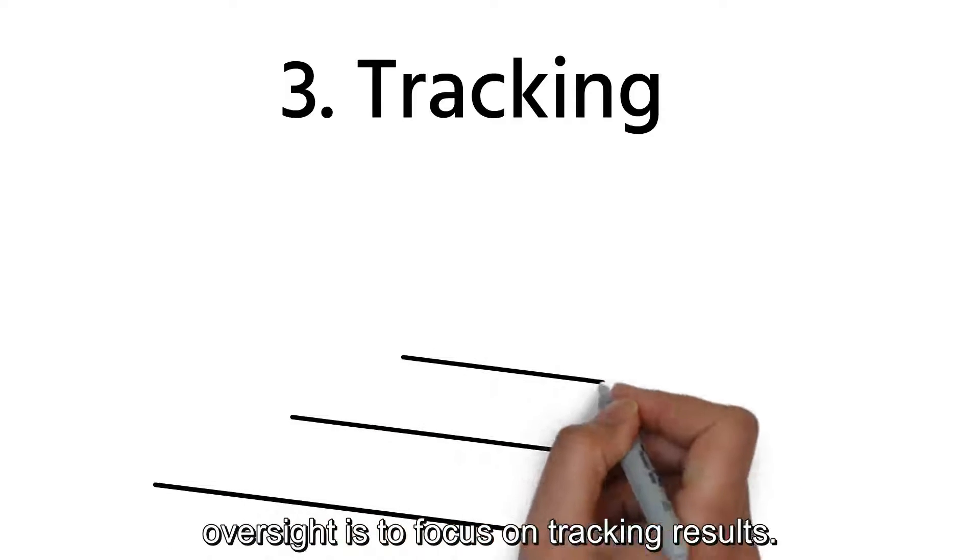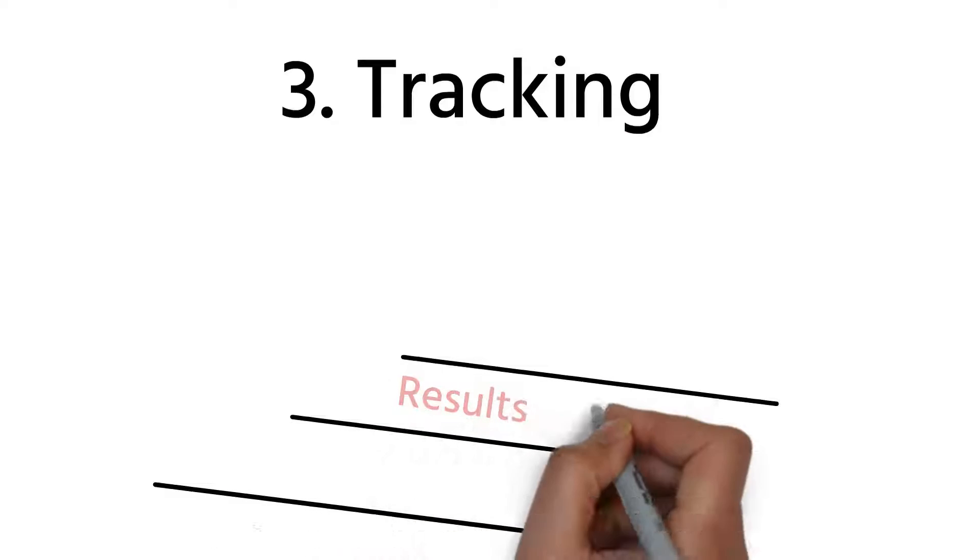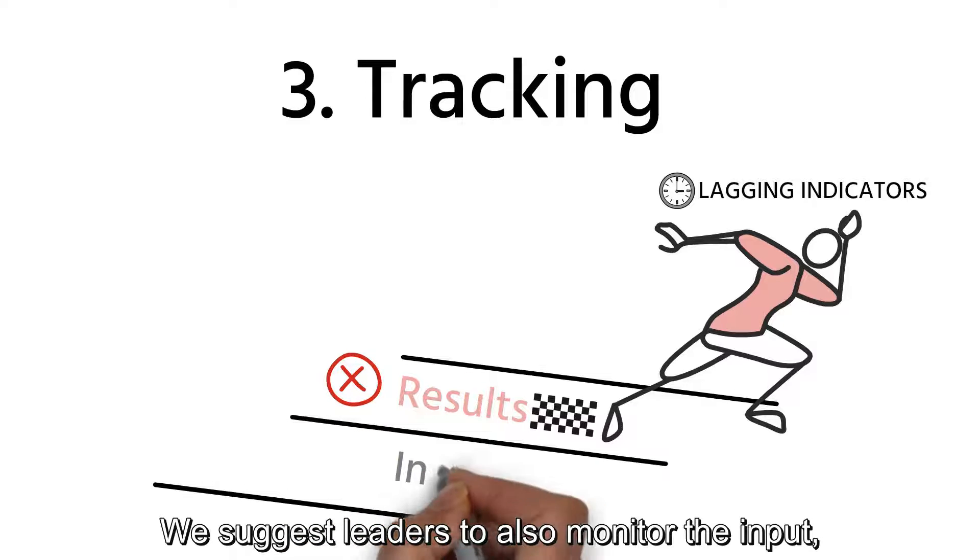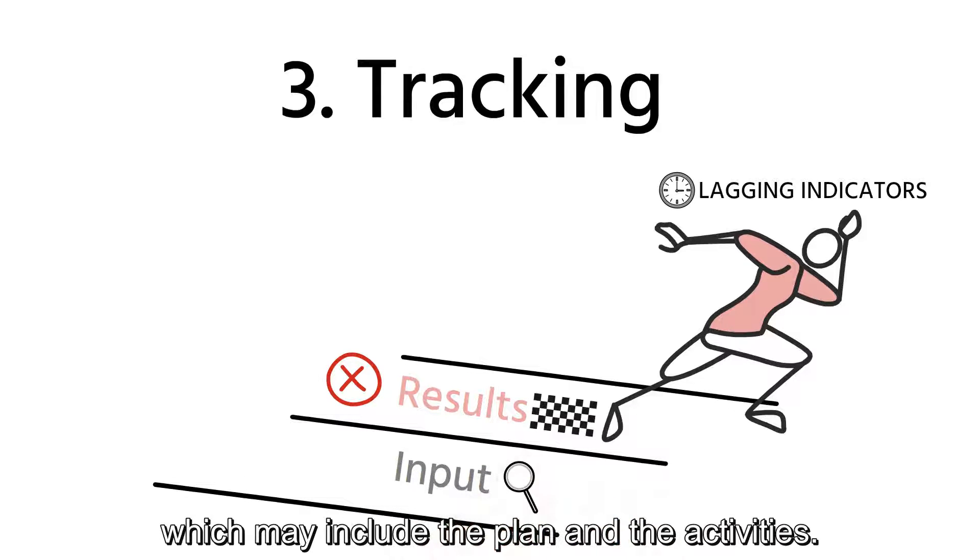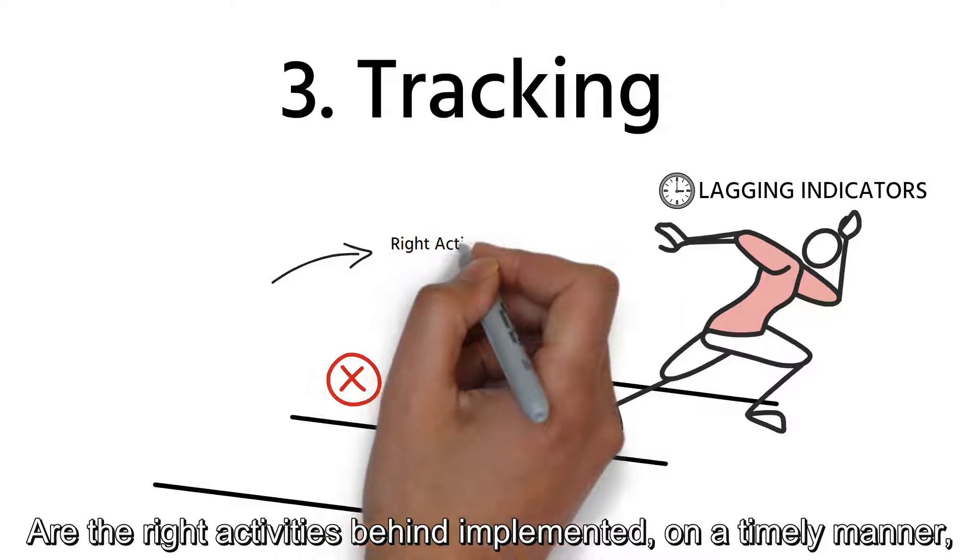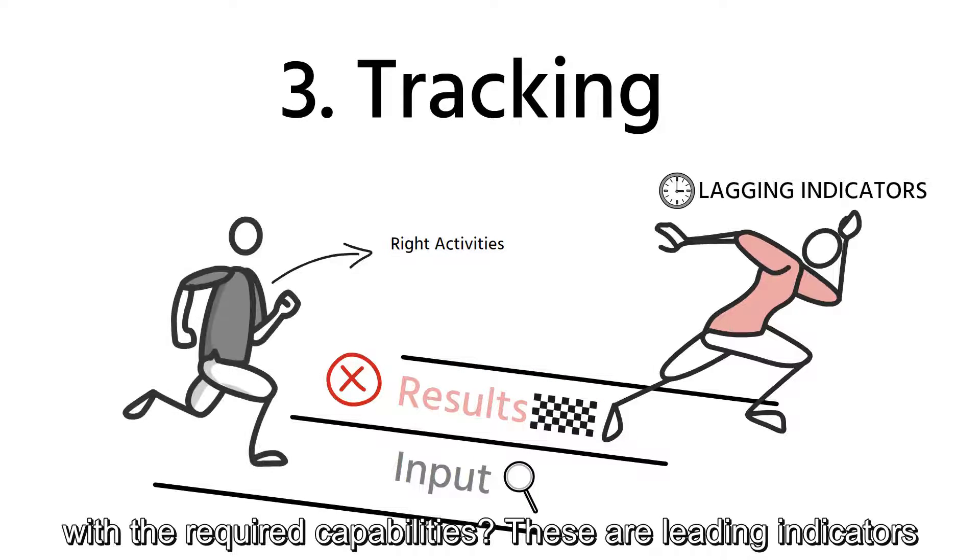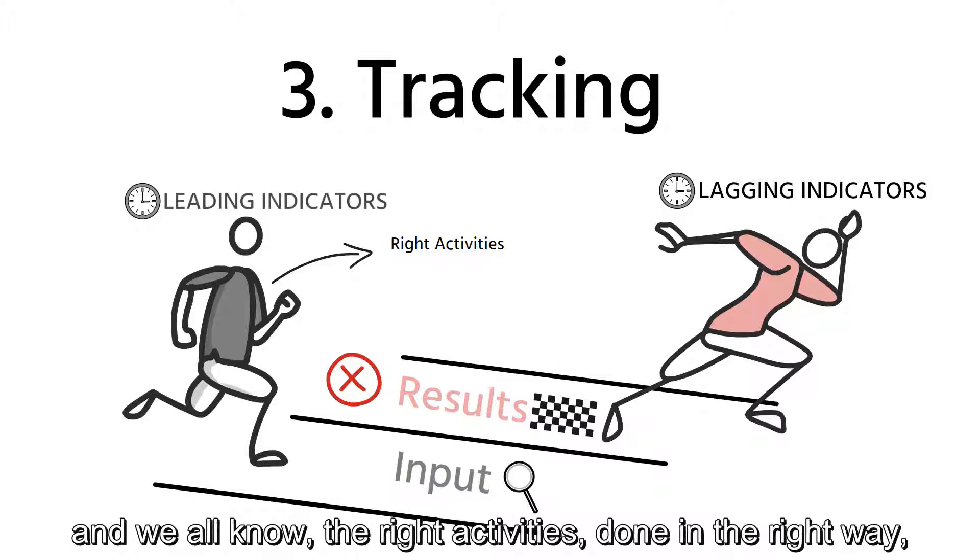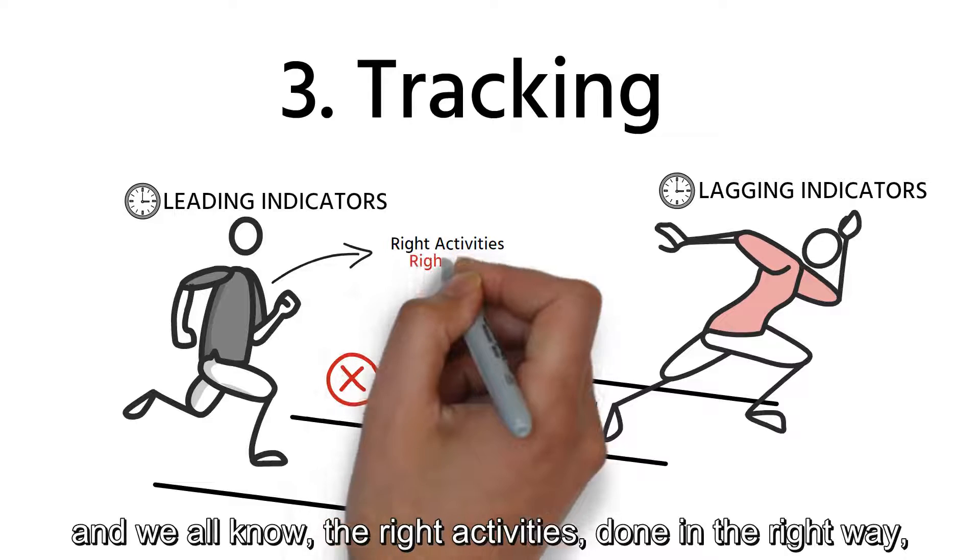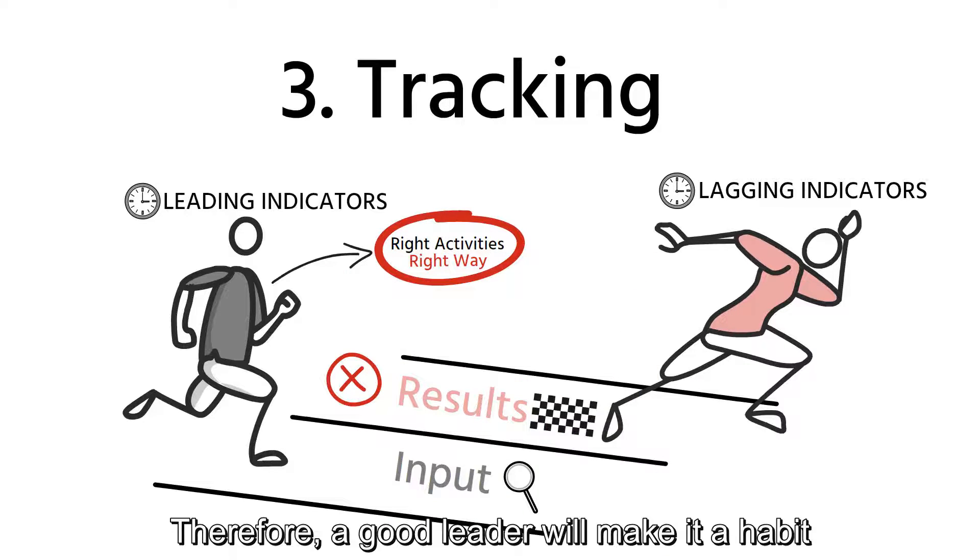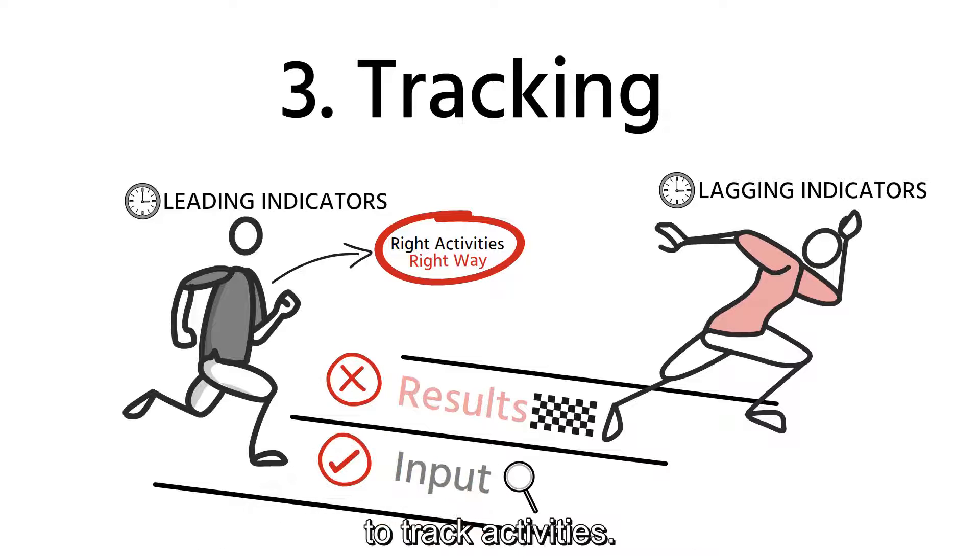T is tracking. One of the common leadership oversights is to focus on tracking results. Actually, if you think about it, results are lagging indicators. We suggest leaders to also monitor the input, which may include the plan and the activities. Are the right activities being implemented in a timely manner with the required capabilities? These are leading indicators, and we all know the right activities done in the right way will usually produce the desired results. Therefore, a good leader will make it a habit to track activities.